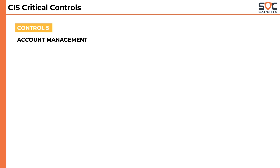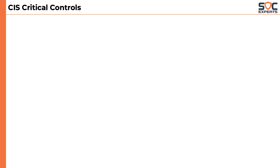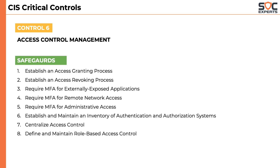The fifth control is account management. It has six safeguards that talk about maintaining a list of accounts, using unique and complex passwords, disabling dormant (unused) accounts, and having a list of service accounts. If the fifth control is all about identity, then the sixth control focuses on access and authorization. It has eight safeguards that talk about having an access granting and revoking process, using multi-factor authentication, and having a centralized access control server.